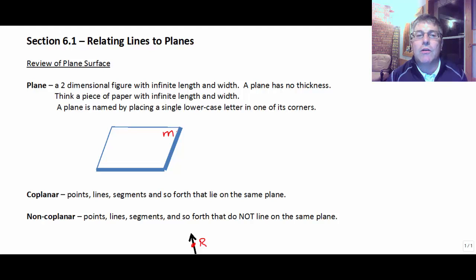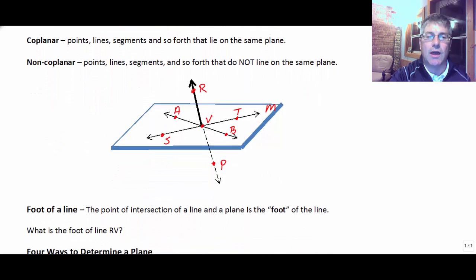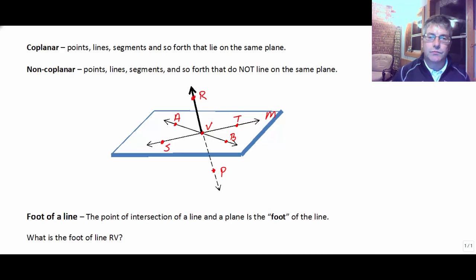Coplanar means points, lines, segments, and so forth that lie on the same plane. Non-coplanar are items that do not lie on the same plane. Let's look at an example. We've got plane M here. Points V, T, S, and A are all coplanar because they all lie in plane M.